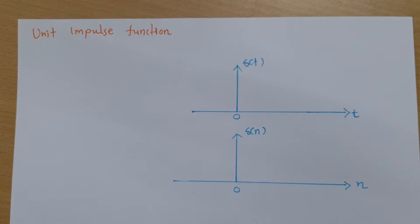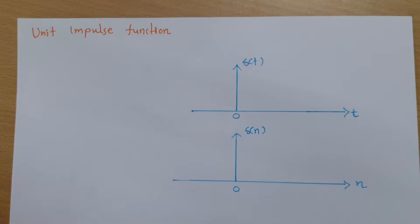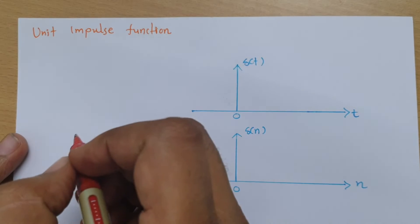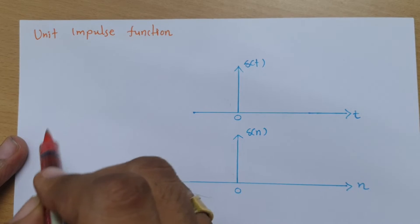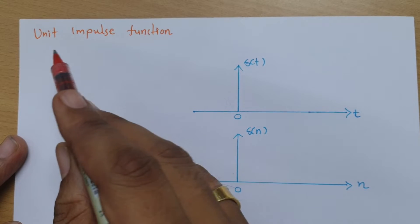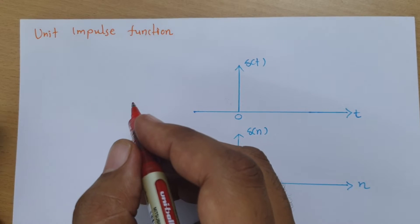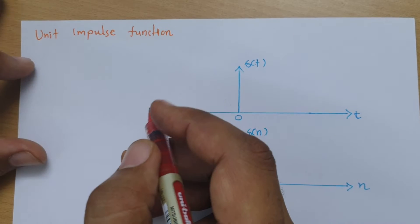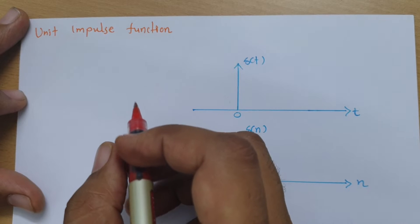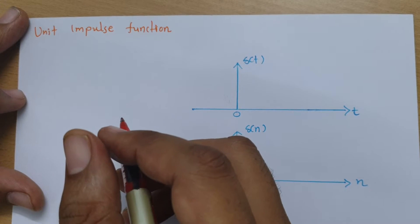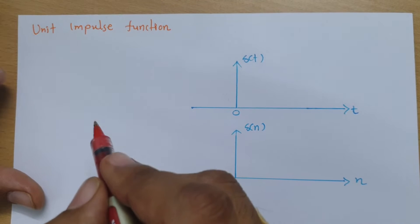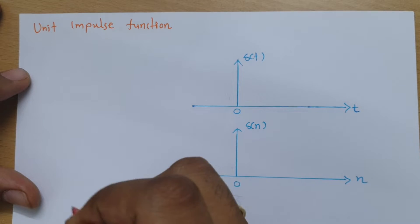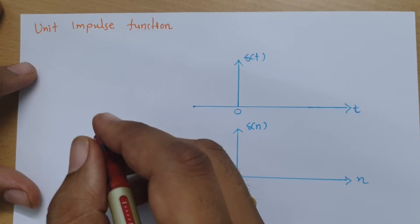Welcome to the Signals and Systems playlist. In this session, I will explain the unit impulse function. First, I will define what the unit impulse function is, then we will see its graphical representation, then I will discuss a few properties that will be helpful to solve problems based on the unit impulse function. Watch this session till the end for a complete understanding.